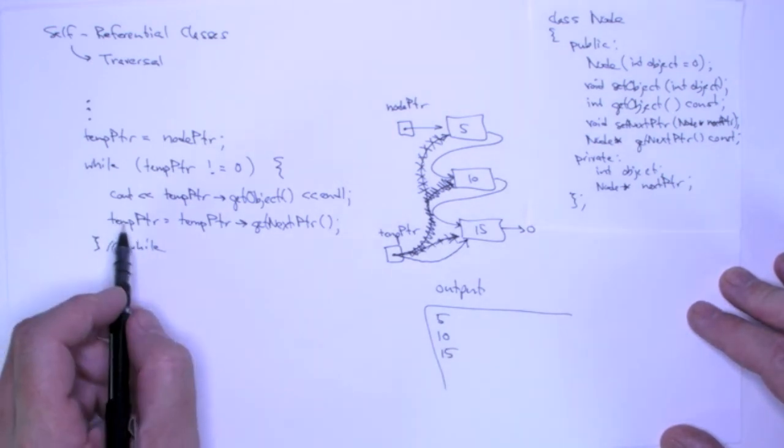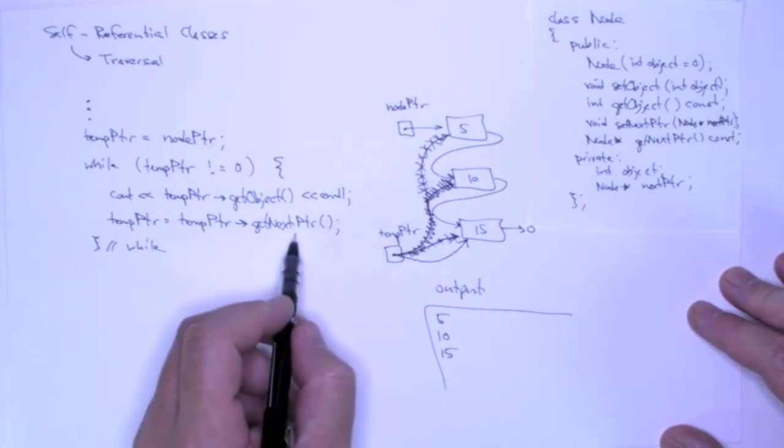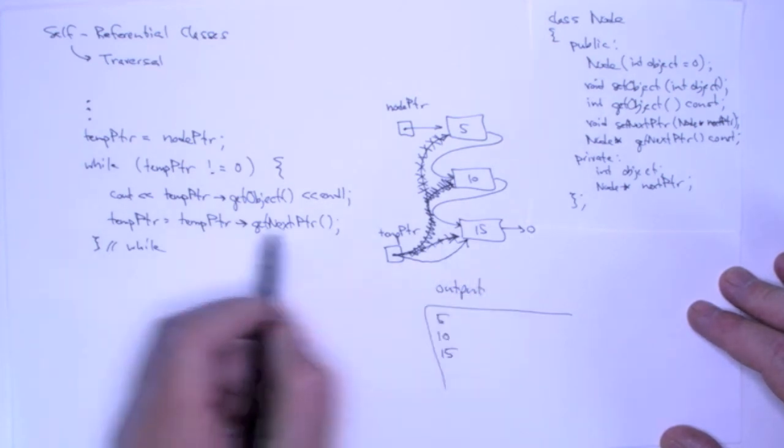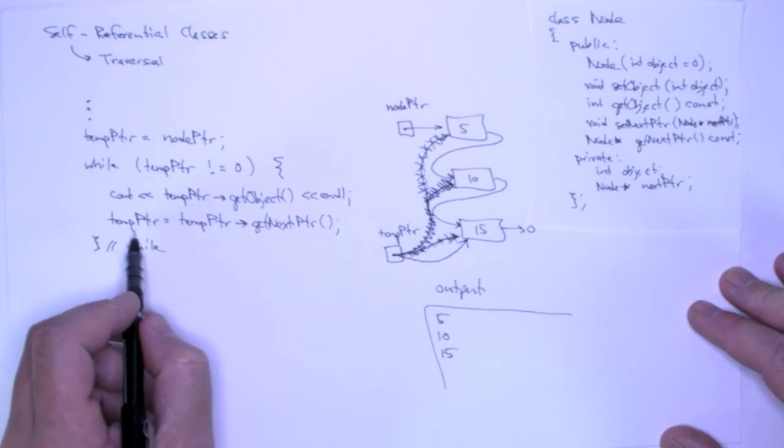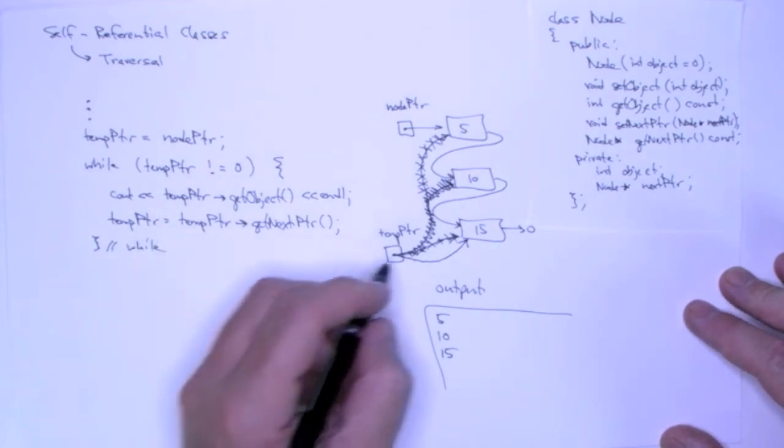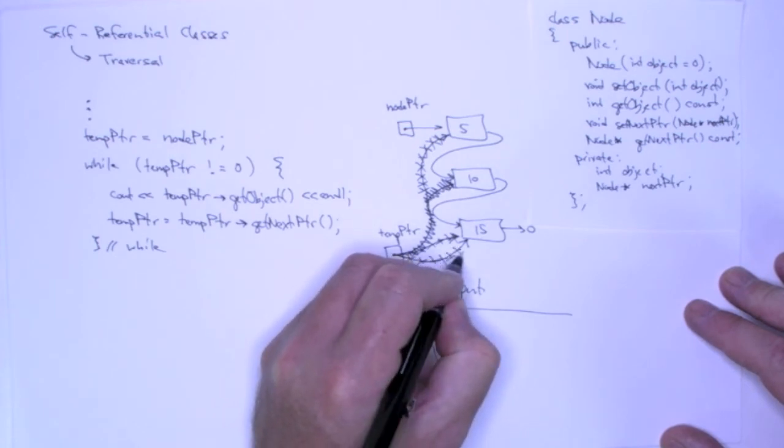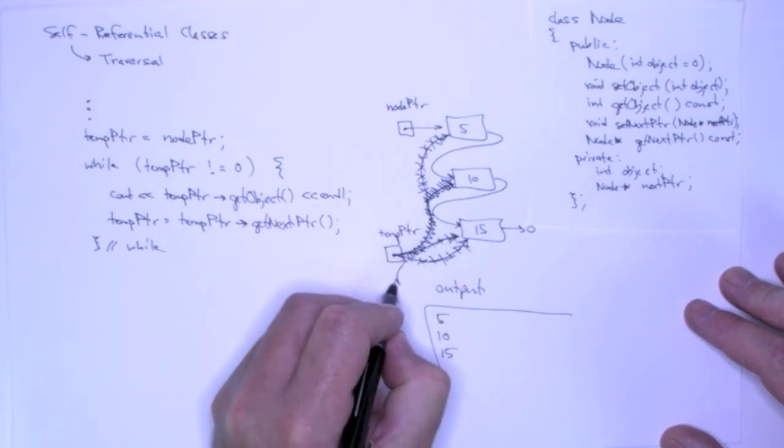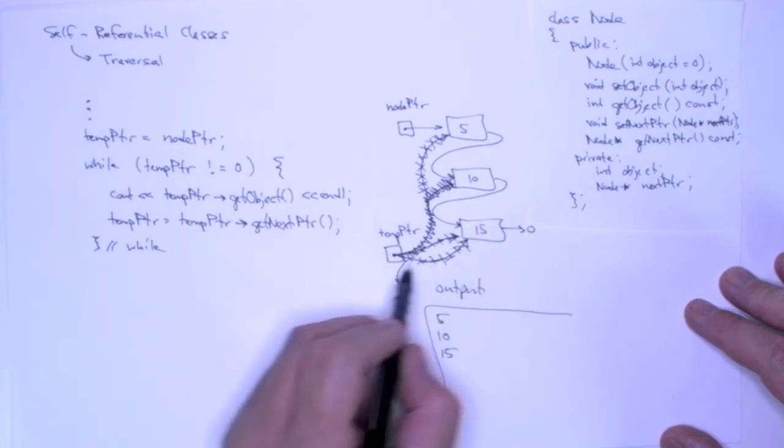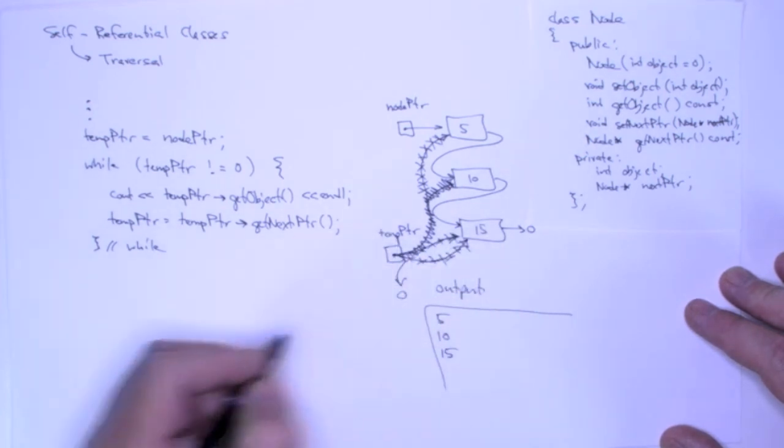And now this is important. Now when I call temp pointer get next pointer it returns null. And that's what temp pointer will point to then. So to draw this, when I call get next pointer it returns null, and so now temp pointer points to null.